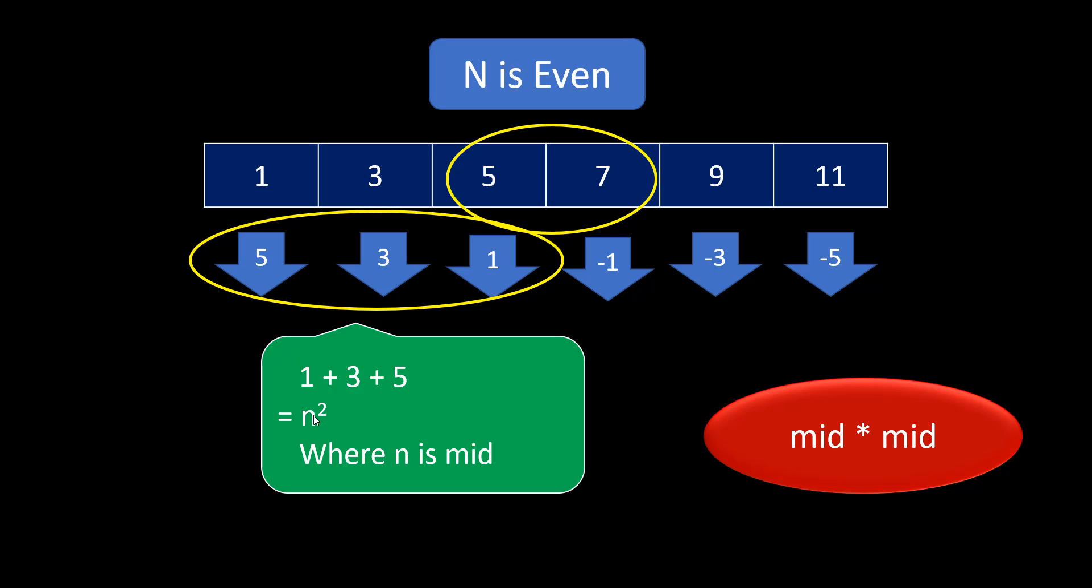So, over here we can say that my formula would be mid multiplied by mid. So, if you see both the formulas, the difference is just about 1 which is for odd cases. So, we can write that condition and get the answer for this particular problem.